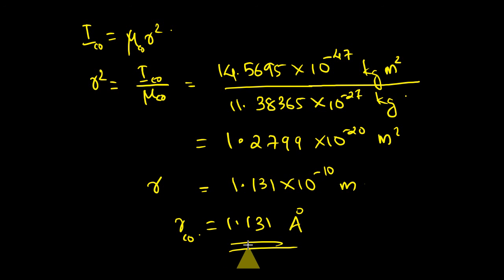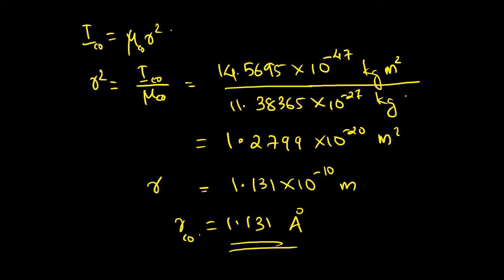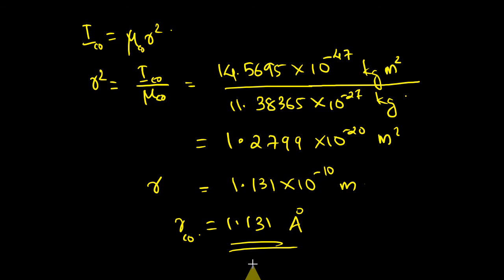We began from data obtained from the rotation spectrum — a line at 3.84235 cm⁻¹ — and calculated the bond length of carbon monoxide as 1.131 angstrom, which is very close to the real bond length. This shows that rotation spectroscopy is an effective tool to determine bond lengths in molecules, and this is an important application of rotation spectroscopy.